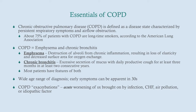COPD stands for chronic obstructive pulmonary disease, and it's defined as a disease state characterized by persistent respiratory symptoms and airflow obstruction. It is an obstructive pulmonary disease, not restrictive. About 75% of patients with COPD are long-time smokers, according to the American Lung Association. Many of the rest are idiopathic. There is a genetic disorder called alpha-1 antitrypsin deficiency — it's very uncommon, affecting fewer than 1% of COPD patients. There are two pathologies behind COPD: emphysema, which is due to destruction of the alveoli from chronic inflammation, resulting in loss of elasticity and destruction of the interstitium and alveolar walls.